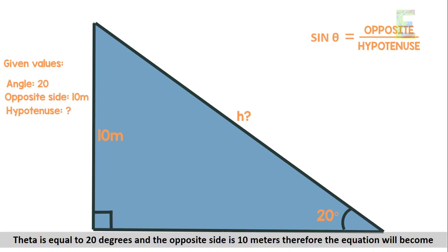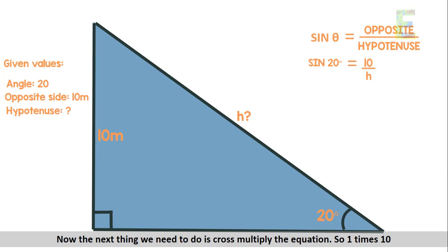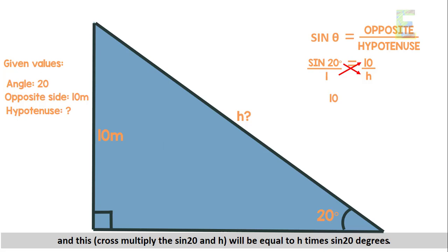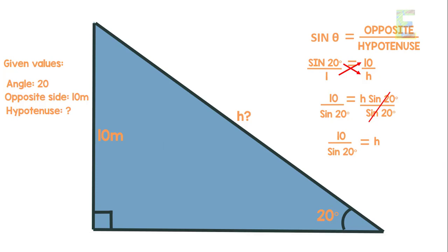Theta is 20 degrees and the opposite side is 10 meters, so the equation becomes: sine 20° = 10 meters / h. We then cross-multiply: h × sine 20° = 10. Dividing both sides by sine 20°, we get h = 10 / sine 20°. Using a calculator, the hypotenuse is 29.24 meters.